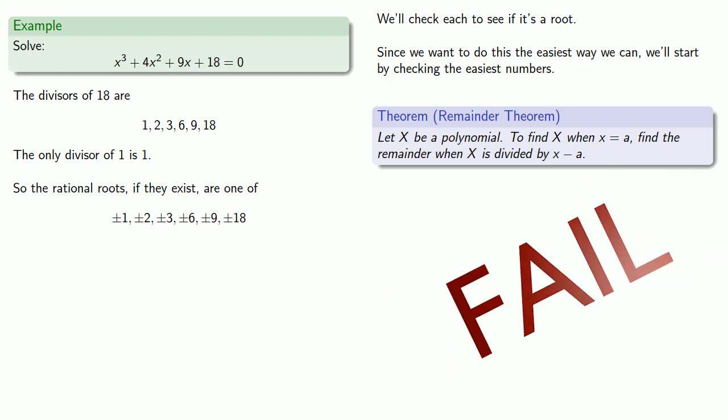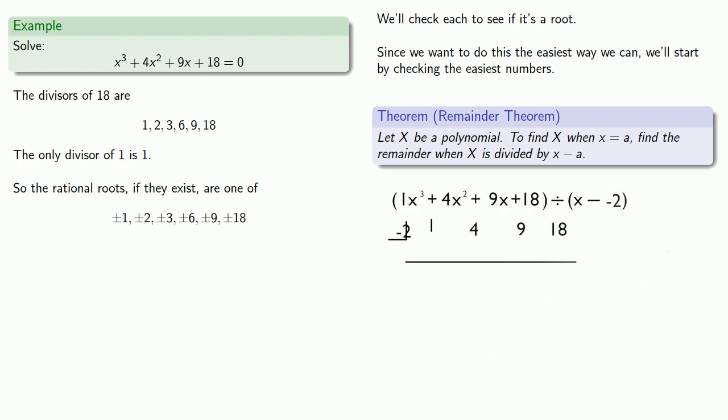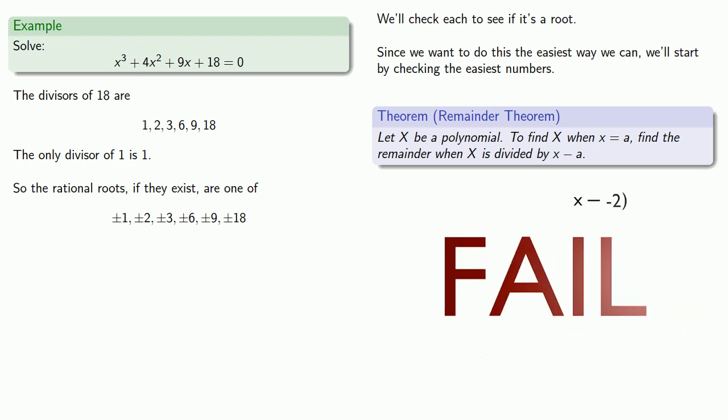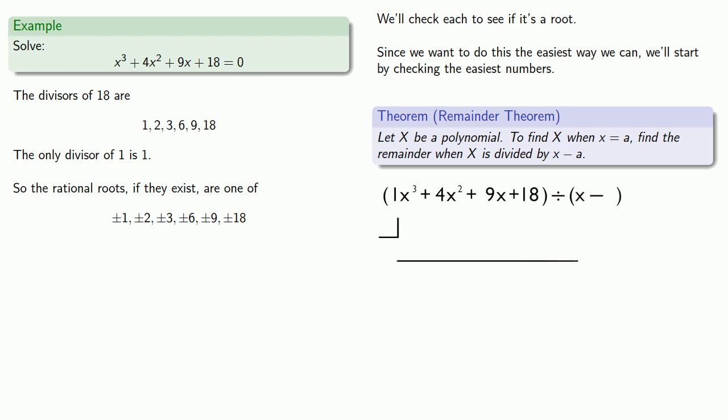So we'll try negative 2. x equals negative 2 and remainder equals 8 means that this is not a root. So we'll try x equals 3. Nope.